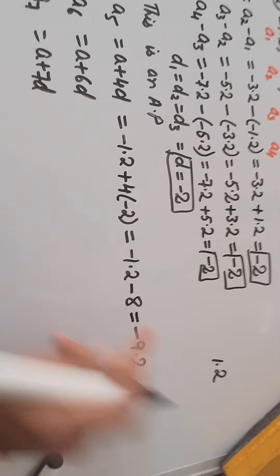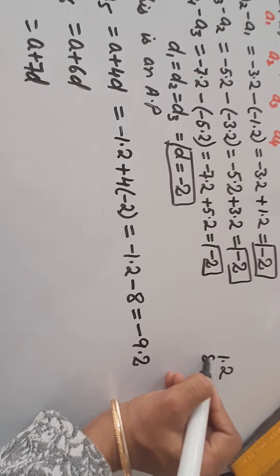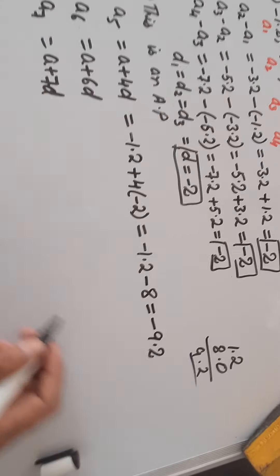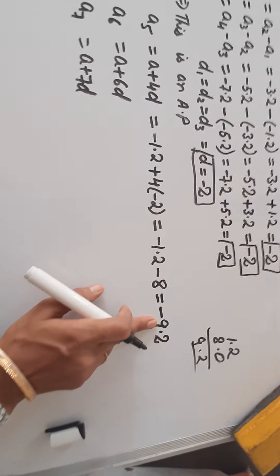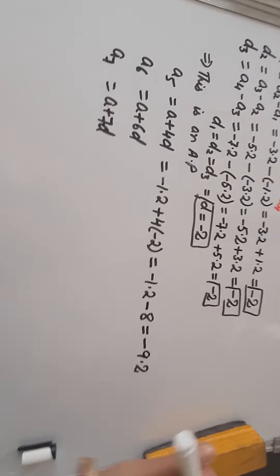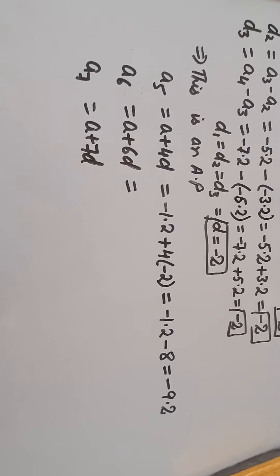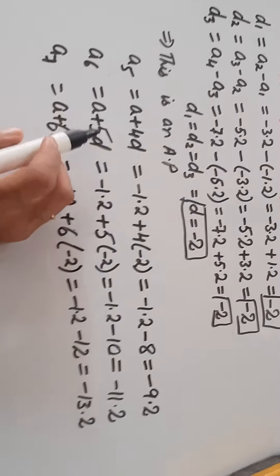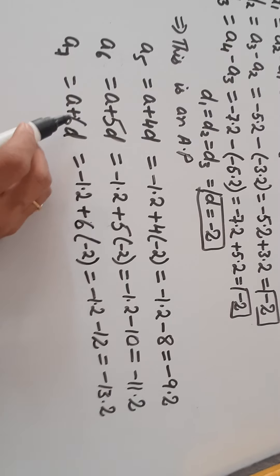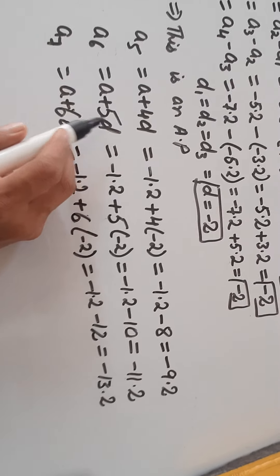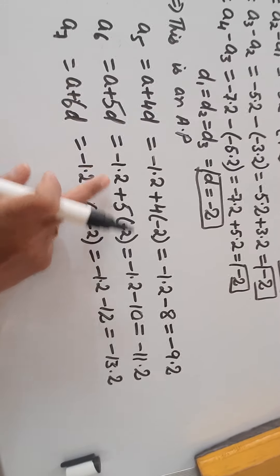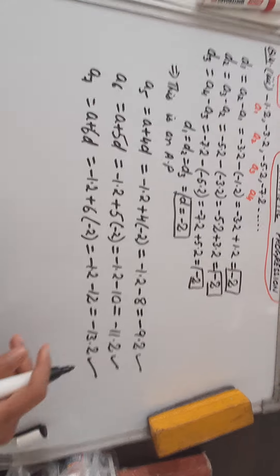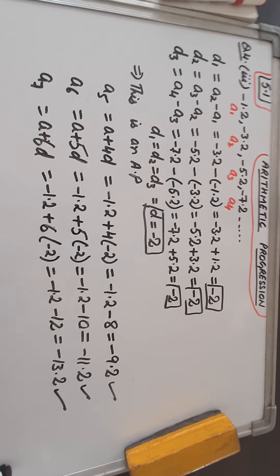8 can be written as 8.0. So from here we get 9.2, and both are negative, so A5 is -9.2. Similarly, solve the remaining two terms. Note: A6 is A plus 5D and A7 is A plus 6D — by mistake I wrote 6 and 7 earlier. By solving, we will get the next three values as the solution.